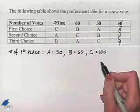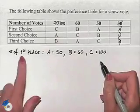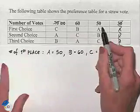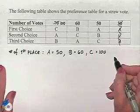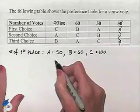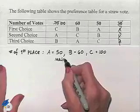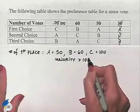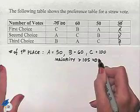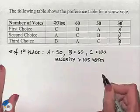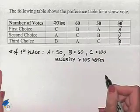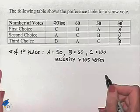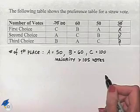Now what we're going to be looking for would be a majority. There are 210 votes altogether. Half of that would be 105. So to have a majority would require us to have a candidate with greater than 105 votes. Since this does not occur, we're going to now eliminate the candidate with the least number of votes and then look at the voting once more.